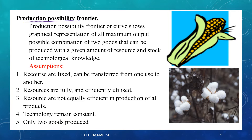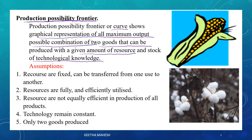The production possibility frontier, or production possibility curve, is a graphical representation of all maximum output possible combinations of two goods that can be produced with given resources and a stock of technological knowledge. This curve shows all maximum output possible combinations of two goods producible with given resources and technology.